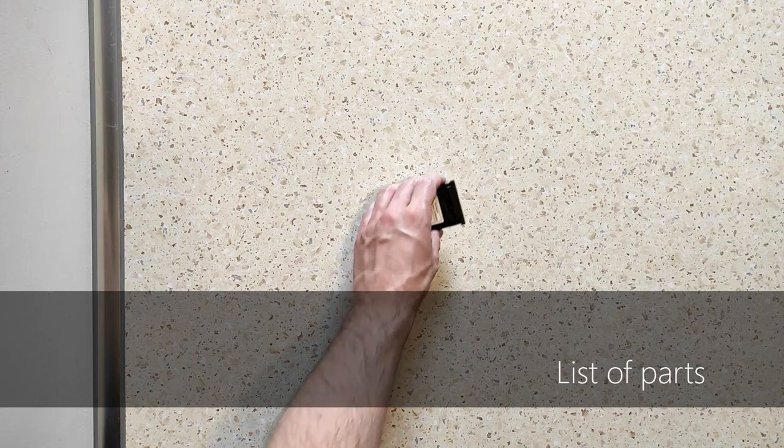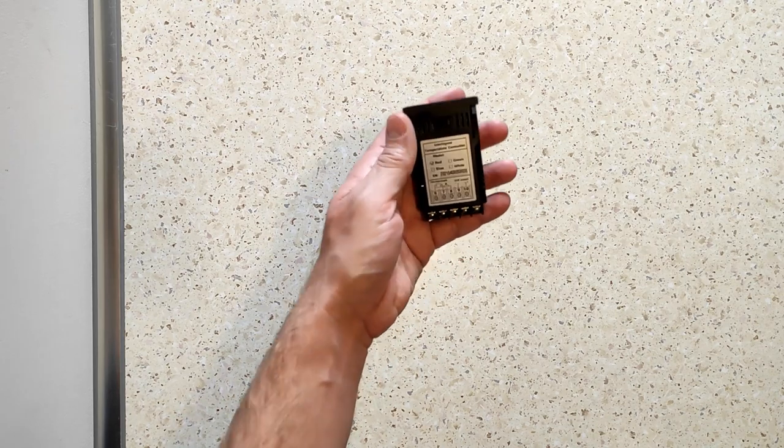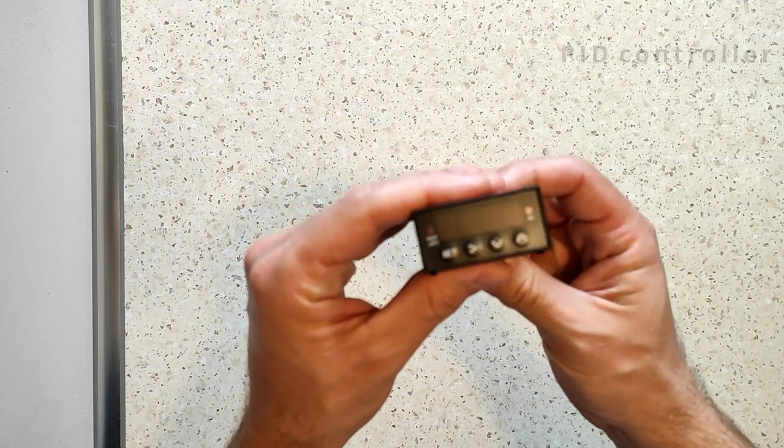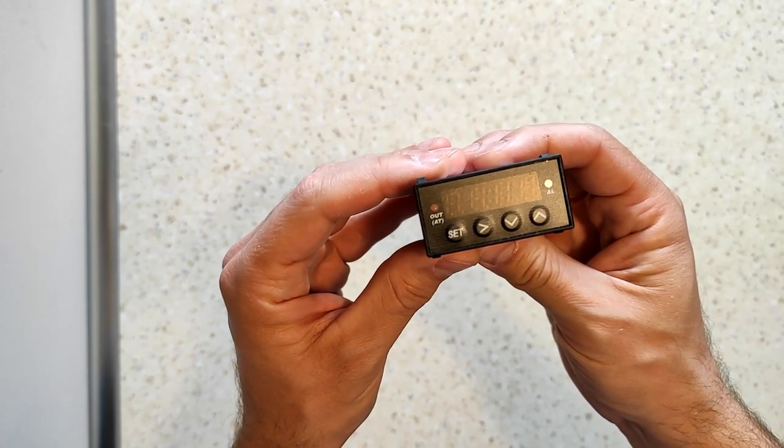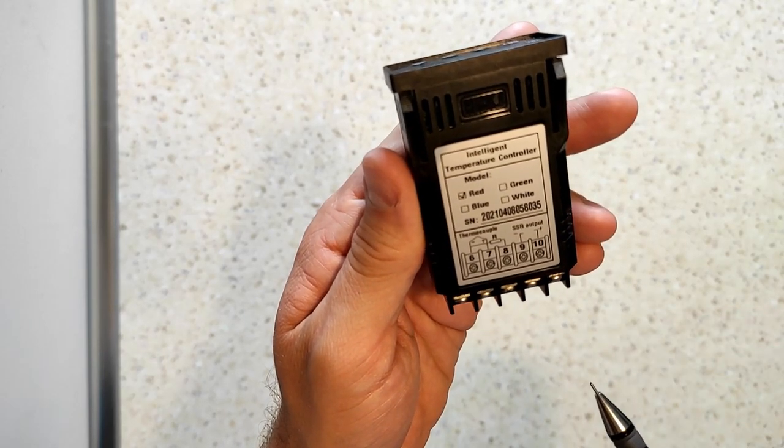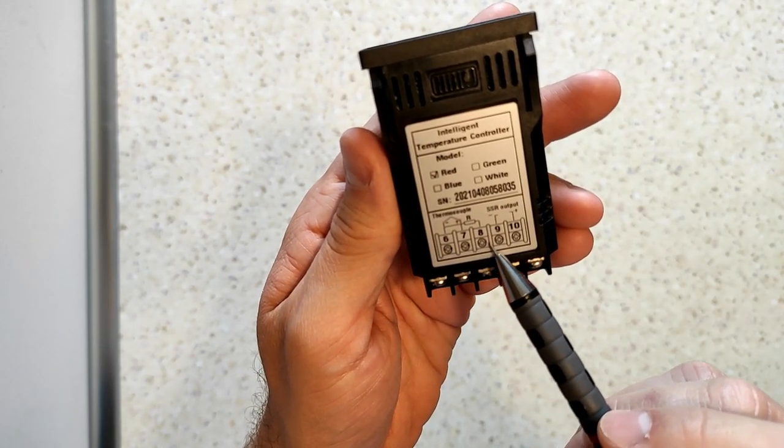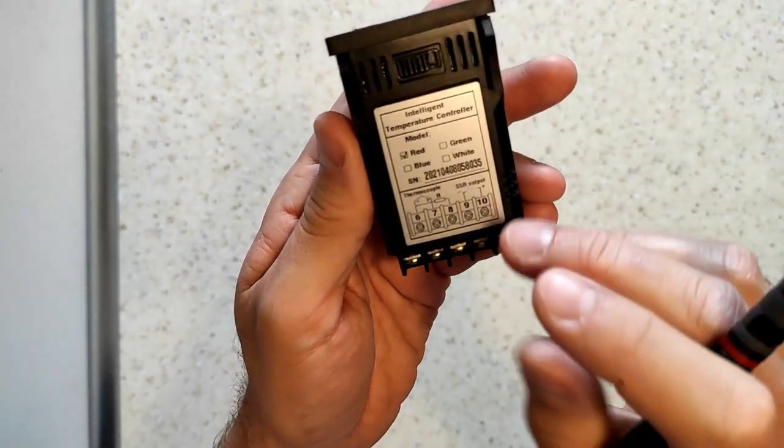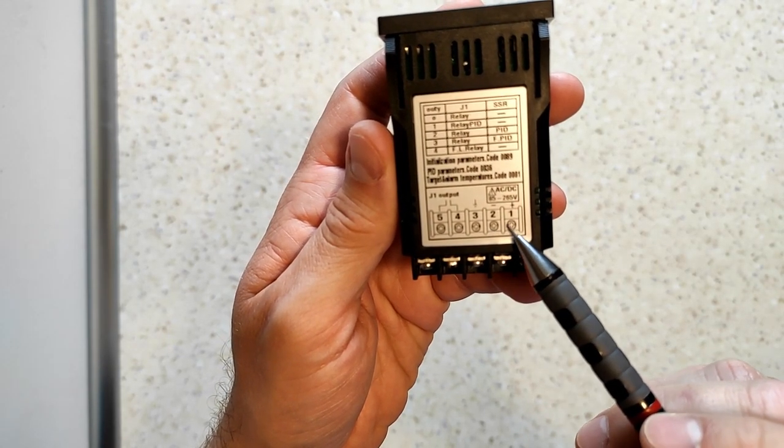This is what you're gonna need. First up is the PID controller itself. This model is called XMT7100 and I bought it on AliExpress. It seems well put together and really tiny. I was actually a bit surprised by its size. It's much smaller than anticipated, which was great. It has 10 terminals for connections. Ports number 6, 7, and 8 are used to attach your temperature sensor. Terminals 9 and 10 are used to connect the PID to the relay. On the flip side, you'll find terminals used for a second relay, the ground connection, and terminals 1 and 2. Those will be used to provide the PID with power.